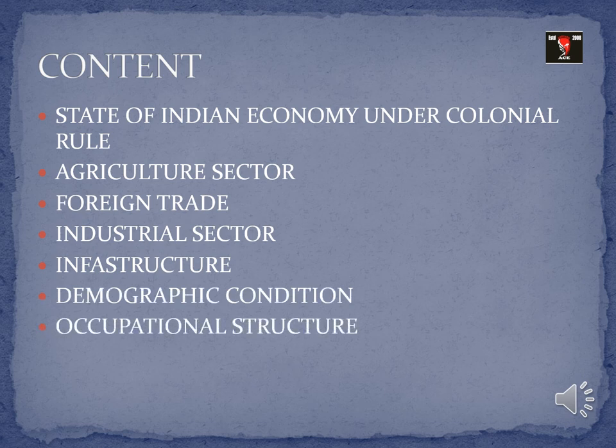The topic is covered under the chapter: the state of Indian economy under colonial rule. It covers agriculture sector, foreign trade, industrial sector, infrastructure, demographic condition, and occupational structure. We are going to discuss how each of these sectors got impacted by various colonial or British policies, and the economic condition that prevailed during that time.